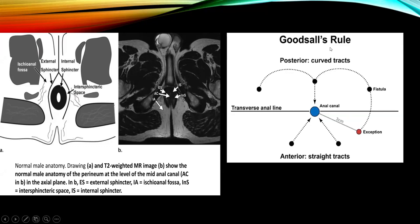Goodsall's rule states that an external opening anterior to the transverse anal line will track in a straight radial manner, while an external opening posterior to the transverse anal line will follow a curved course to the posterior midline. An exception to this rule is external openings three centimeters away from the anal verge.